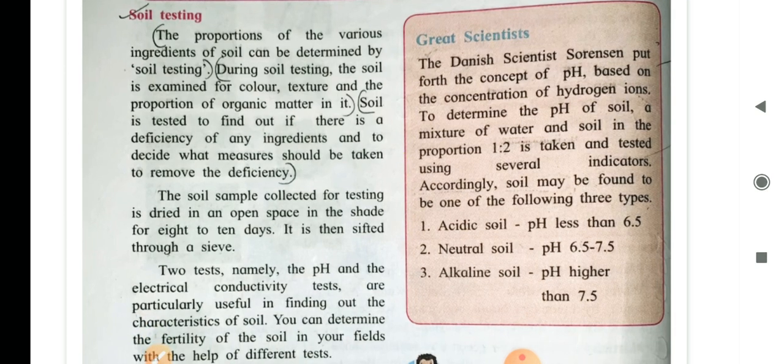Now, soil testing. The proportion of the various ingredients of the soil can be determined by soil testing. During soil testing, the soil is examined for color, texture and the proportion of organic matter in it. Soil is tested to find out if there is a deficiency of any ingredients. Deficiency means shortage or less. And to decide what measures should be taken to remove this deficiency.